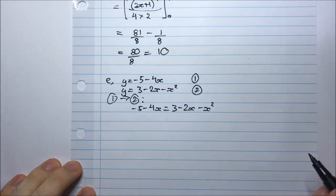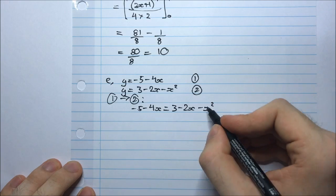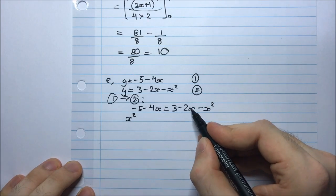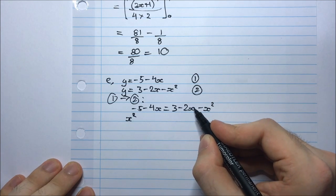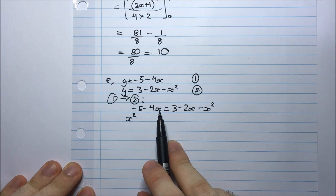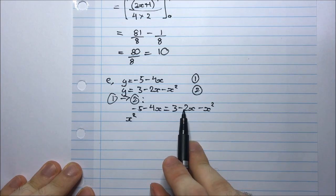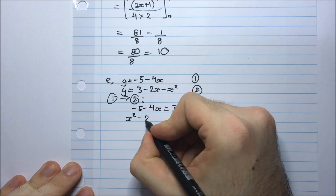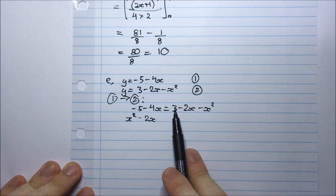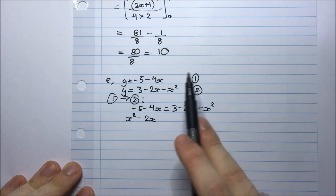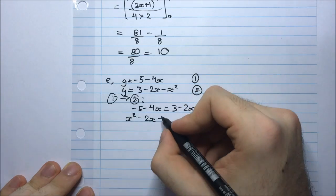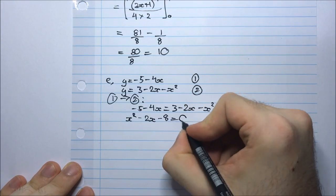Bringing this -x² over will become +x². I'm bringing -2x over, so it's going to become +2x, but I also have -4x here. So I have -4x + 2x will give me -2x. I have -5 here, but I'm bringing over what was a +3. When it comes over it will become -3. So -5 - 3 will be -8 = 0.